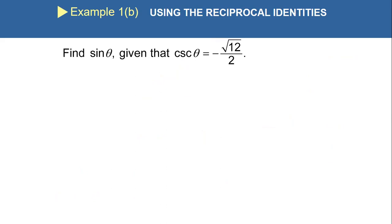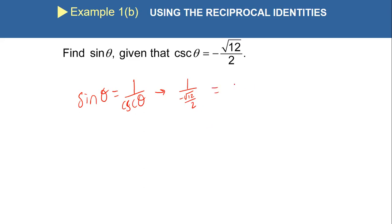Next example: find sine θ given that cosecant θ equals negative √12 over 2. The relationship between sine and cosecant is that they are reciprocals. So sine θ equals 1 over cosecant θ, which means we substitute: sine θ = 1 over (−√12 / 2). Then keep, change, flip — we get negative 2 over √12. But this is not in simplest form.